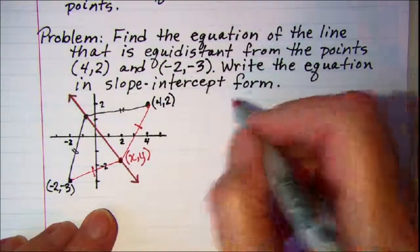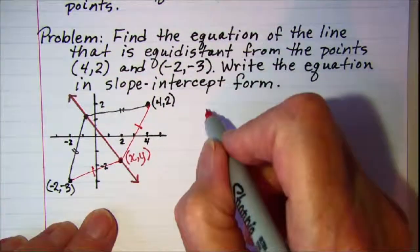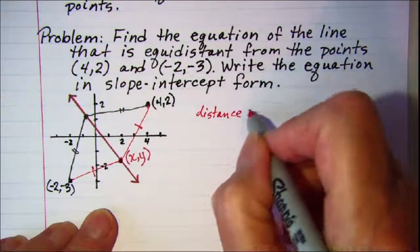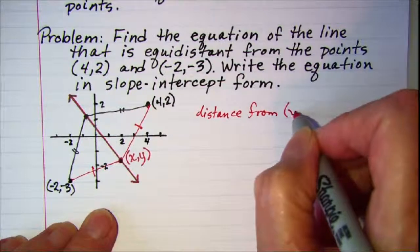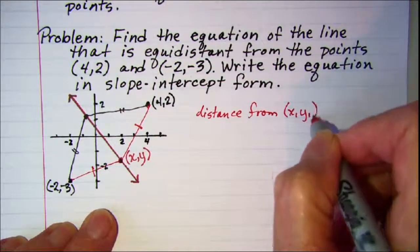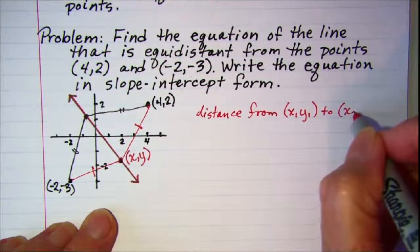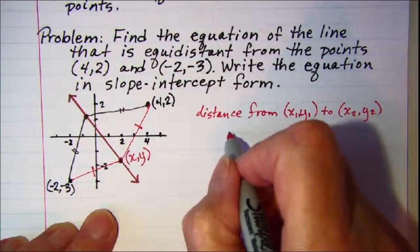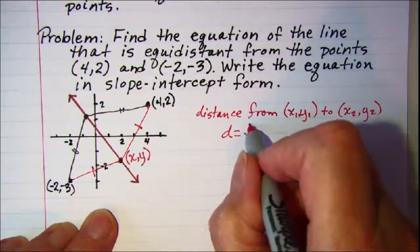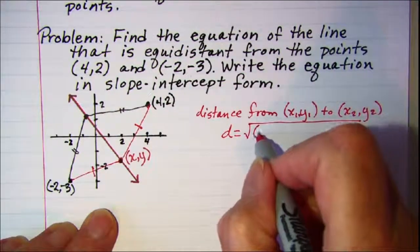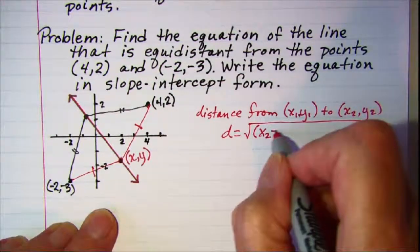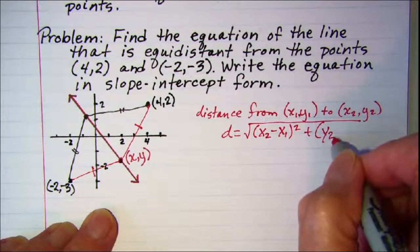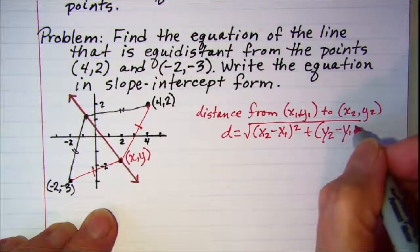So we need to use the distance formula. Remember the distance formula. The distance from some point (x₁, y₁) to a point (x₂, y₂) is given by the formula: distance equals the square root of (x₂ - x₁)² plus (y₂ - y₁)².